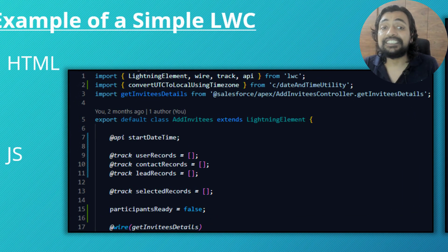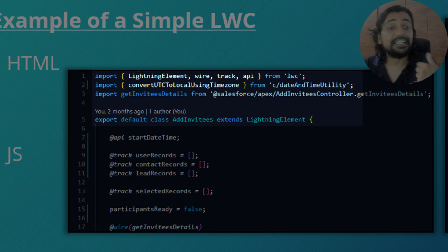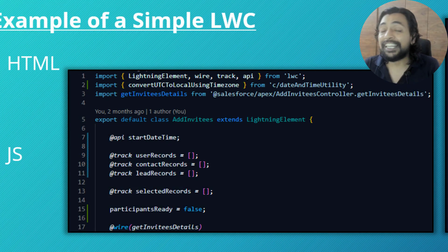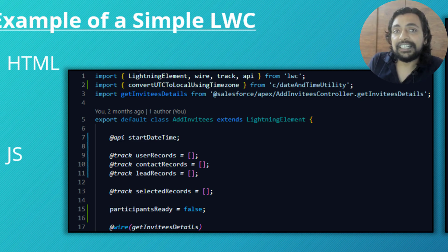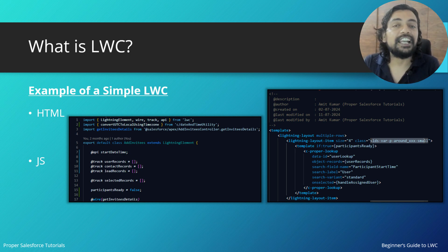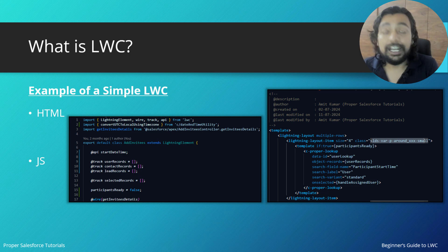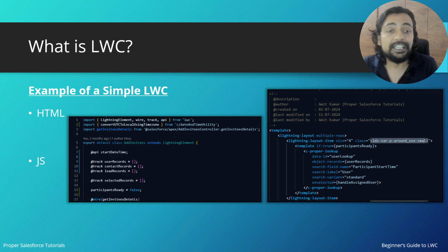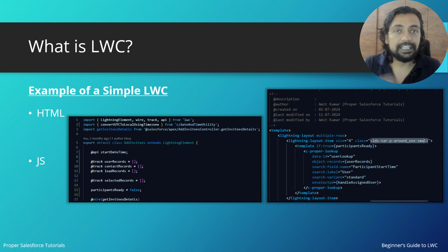In the JavaScript file, you can see it is modern JavaScript — we are importing and exporting things and building a class. Here we inherit the characteristics of LightningElement. LightningElement is a predefined class in LWC, and if you want your JavaScript class to behave like a Lightning Web Component, it must extend the LightningElement class.